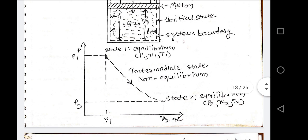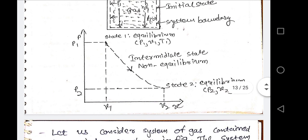So here I am giving the connection between point 1 and 2 through a dotted line. The intermediate states are not at equilibrium. This line may be a curved line, a straight line, a curve in an upward direction, backward direction, or side direction — any type of curvature is possible because we do not know the intermediate conditions.